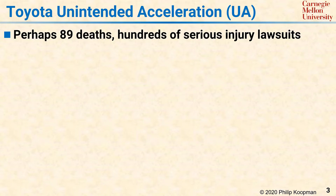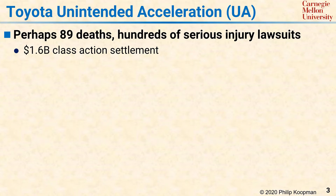A famously flawed safety-critical system was the electronic throttle control system in model year 2002 through 2010 Toyota vehicles. That system was said to cause unintended acceleration, abbreviated as UA. UA, due to vehicle defects, was thought to be the cause of perhaps 89 deaths and resulted in many hundreds of lawsuits for death and serious injury. A class action lawsuit in the US settled for more than $1 billion in addition to settlements from the many death and injury cases.